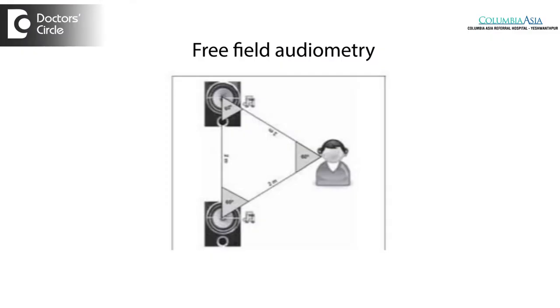The commonly performed subjective tests include free field audiometry, for children who cannot give proper responses — typically those in an age group less than two years. In this test, we give a sound from either the left side or the right side and see whether the child responds by turning their head. It's a rough estimate and not exact, but it works as a screening tool.